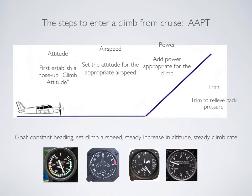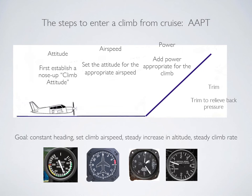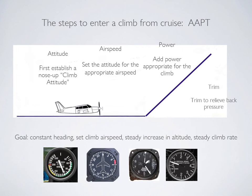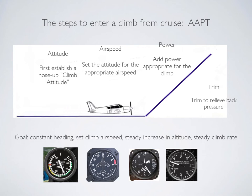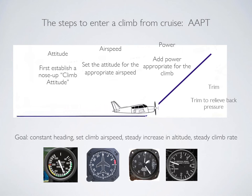To enter a normal climb, you start with attitude. You establish yourself into a nose-up attitude — not too nose-up, but you probably won't be able to see the ground anymore from this attitude. Naturally, in this transition to a nose-up attitude, without an increase in power, your airspeed is going to start to decrease.